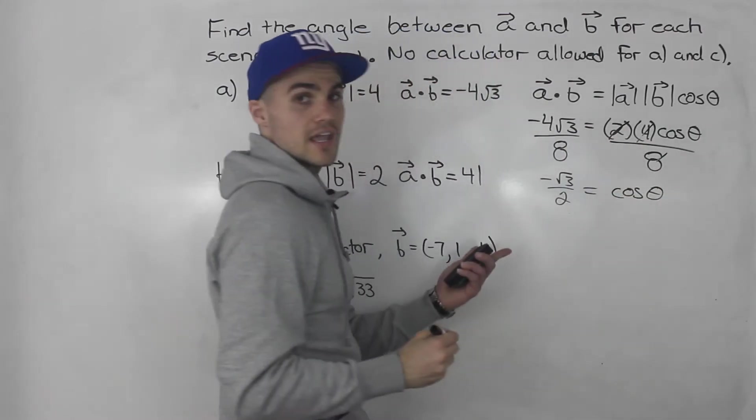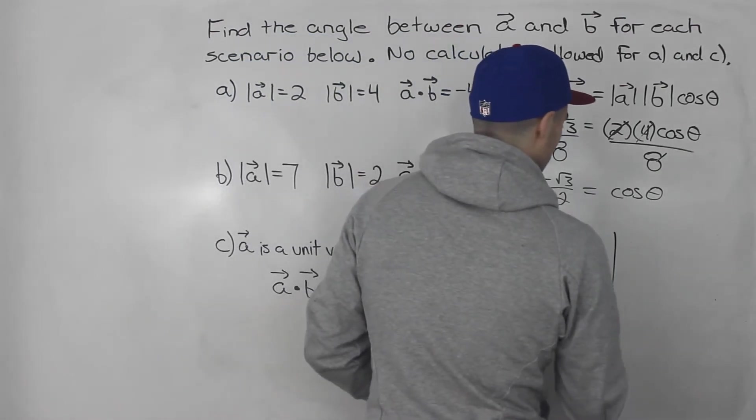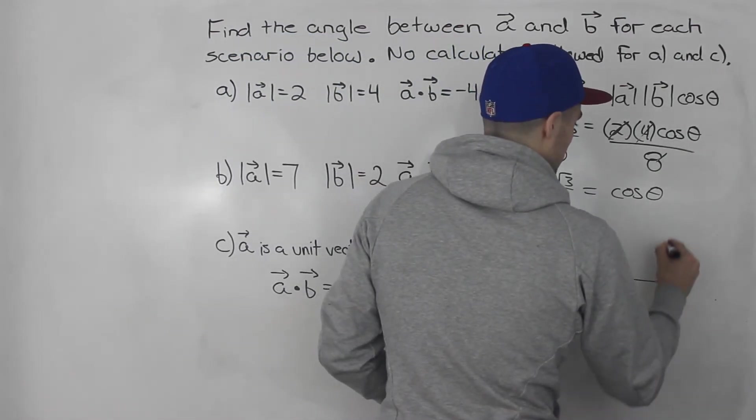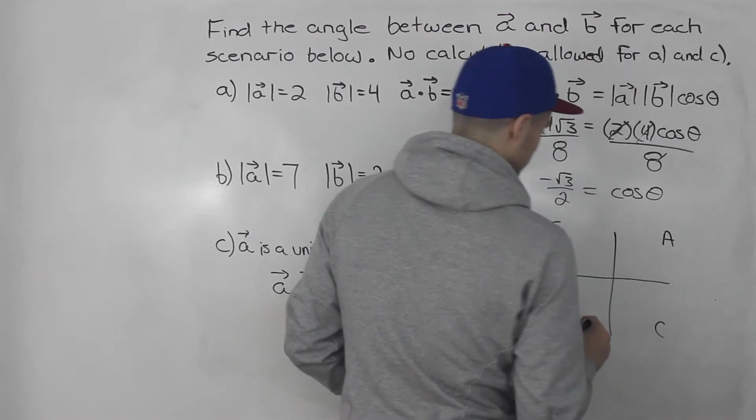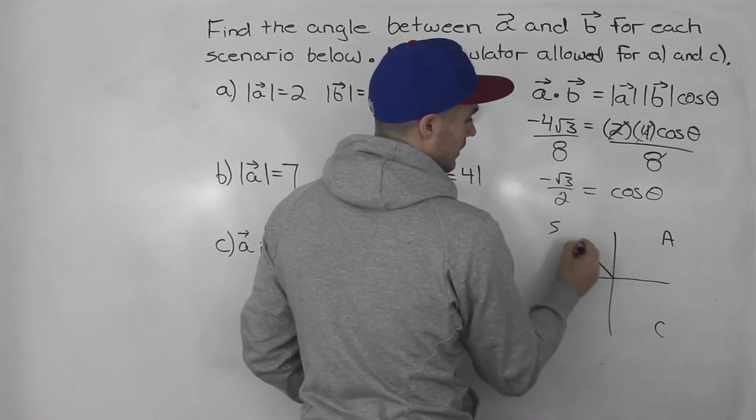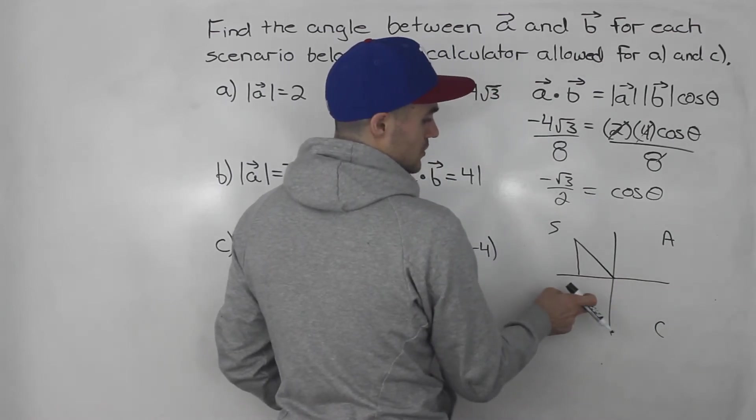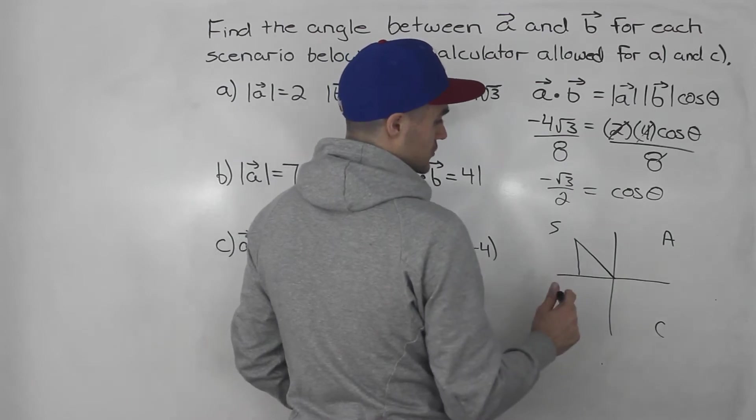And when does cos theta equal negative root 3 over 2? Well, we can't use a calculator for this. So if you remember, we've got to do the CAST rule. Where is cos going to be negative? It's going to be negative in this quadrant, also in this quadrant, the tan quadrant, the third quadrant, but let's just work with this quadrant for now.